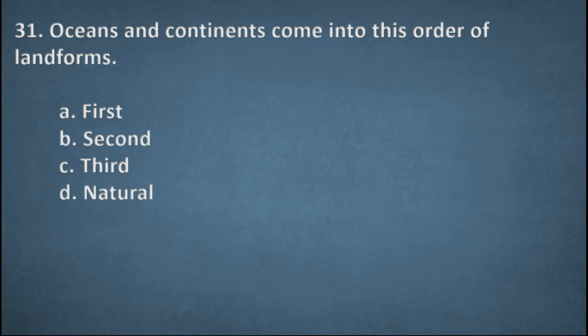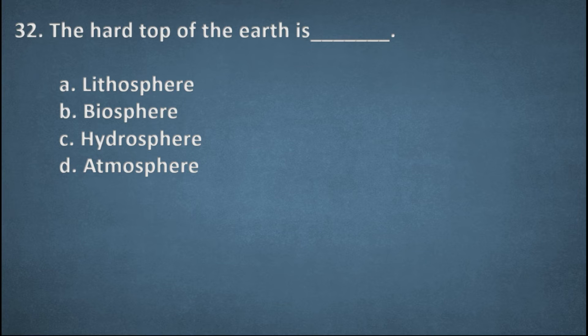Next one. Oceans and continents come into these order of landforms. Options: First, Second, Third, Natural. The right option, First, Option A. Next one. The hot top of the earth's surface is options: Lithosphere, Biosphere, Hydrosphere, Atmosphere. The right option, A, Lithosphere.